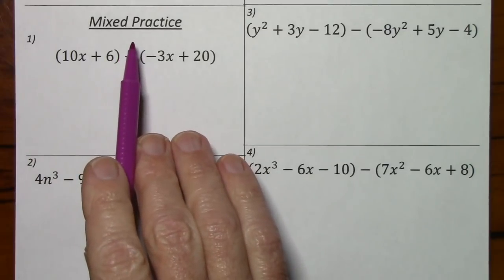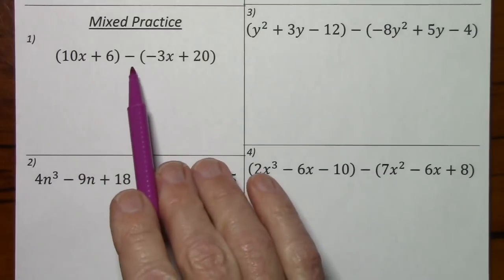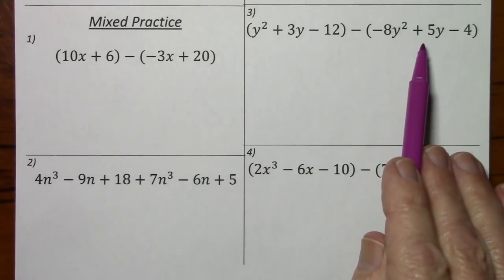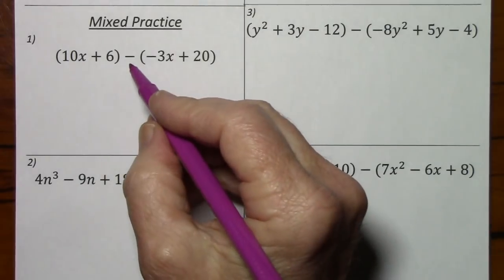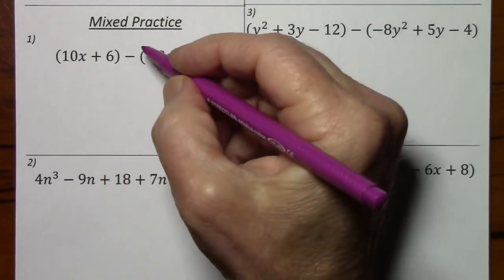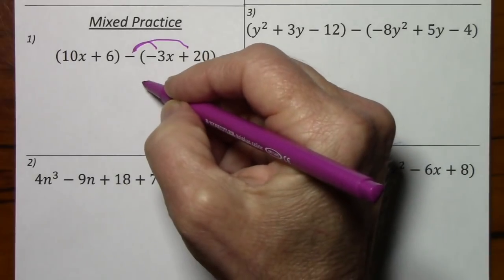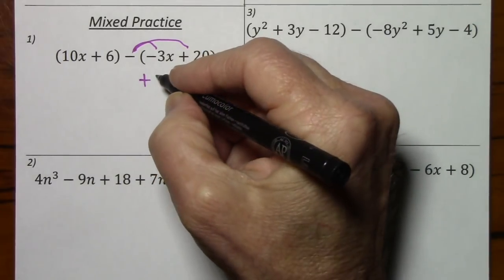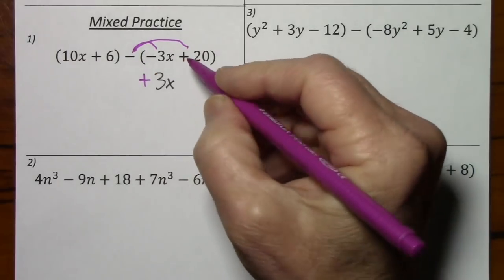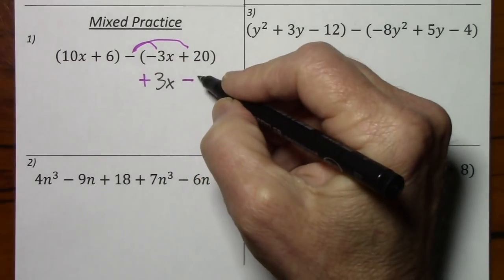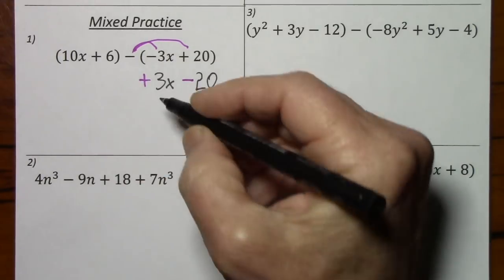Now for mixed practice, I'll go over 11 more problems covering a variety where you're adding or subtracting polynomials or combining like terms. Here we'll need to distribute the negative, so this would be a positive 3x and a negative 20. I'll bring these down.